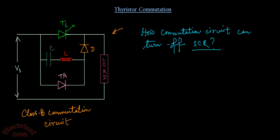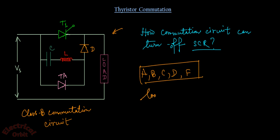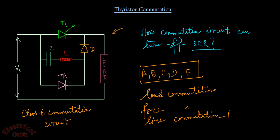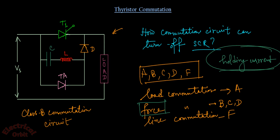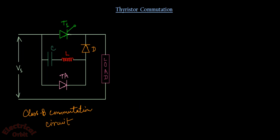How does this particular circuit reduce the thyristor current below the holding current? This is a Class B commutation circuit. There are several types of commutation circuits — Class A, B, C, D, E, F — some are called load commutation, some are called force commutation, and Class F is sometimes called line commutation. This is Class B, or force commutation — 'force' because the circuit is forcefully reducing the thyristor current below the holding current.